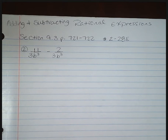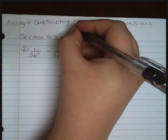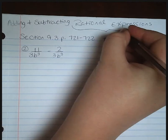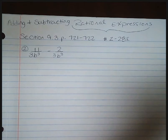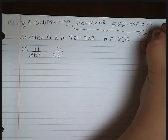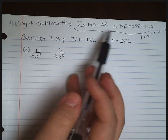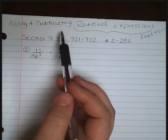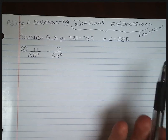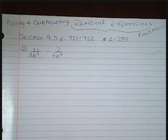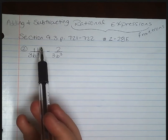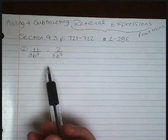As a little bit of a review, we are used to rational expressions — we've talked about them a couple of times so far. Rational expressions are just a fancy way of saying we're going to be working with fractions. Remember that your numerator is your top number, like this 11 and 2, and your denominator is your bottom number, like that 3b to the 3rd.